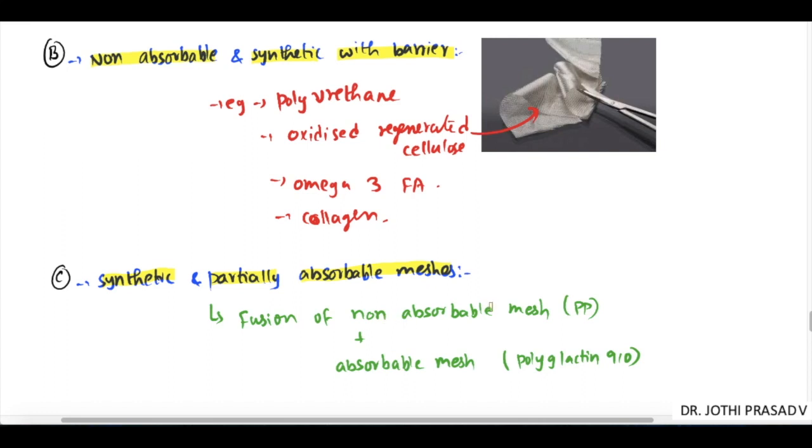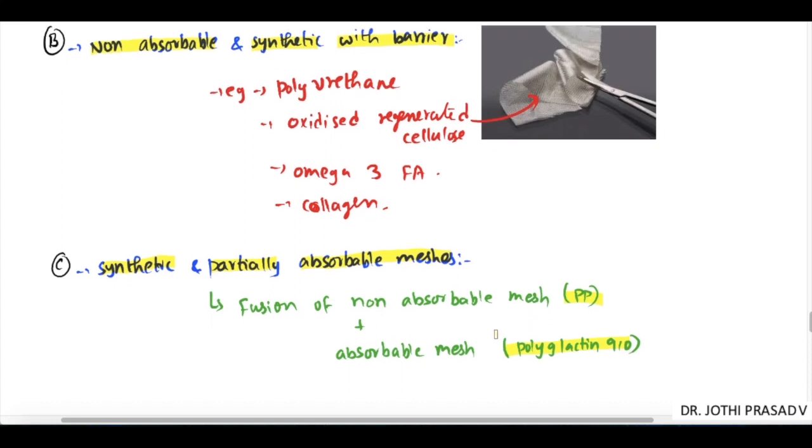Third is synthetic partially absorbable meshes, where we combine non-absorbable mesh like polypropylene with absorbable mesh such as polygalactin 910. The basic idea is to reduce the density of the biomaterial and subsequent inflammatory reaction while retaining wound strength.